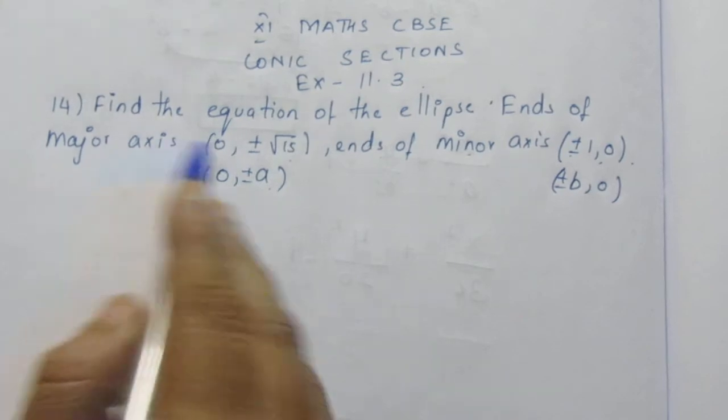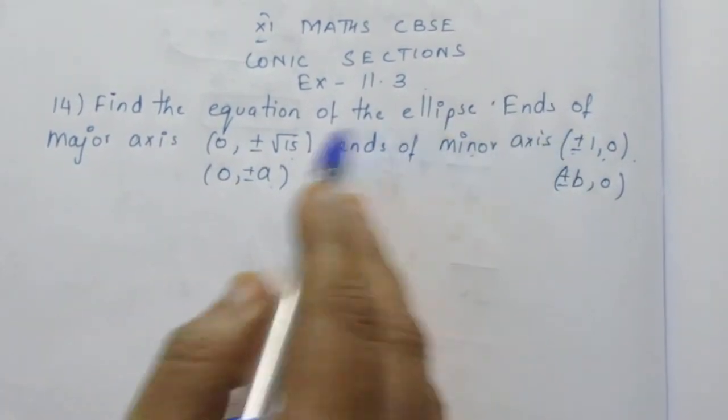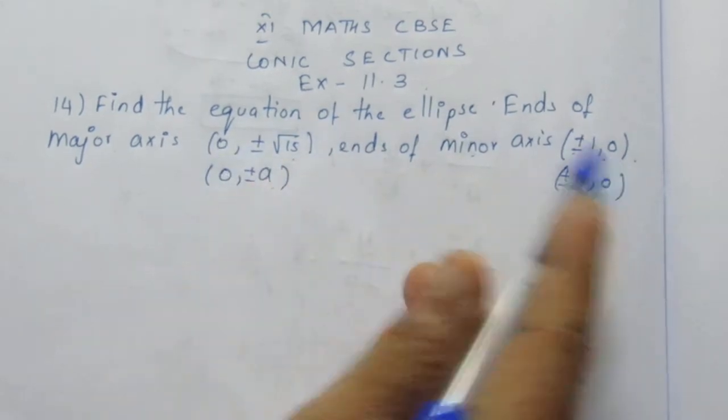Now we know the major axis is on the y-axis and the minor axis is on the x-axis. The rest is 0.